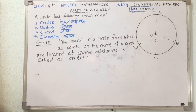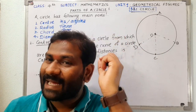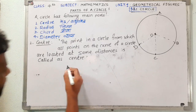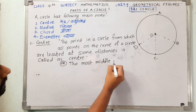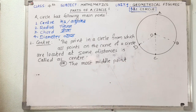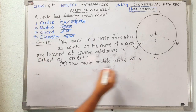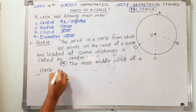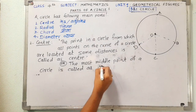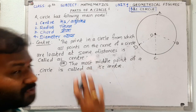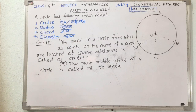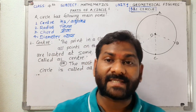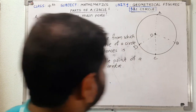Can we make the definition more simple? The most middle point of a circle is the center of the circle. A circle has only one center.